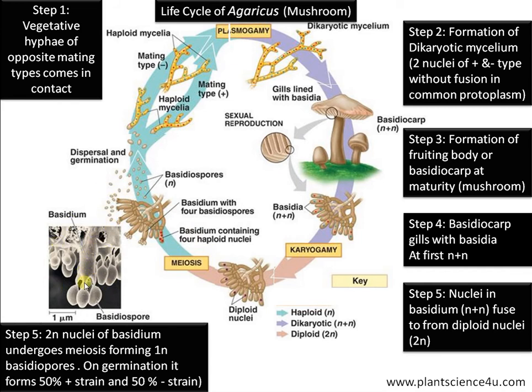This is an enlarged view of the basidium. You can see the basidium with an outgrowth called the sterigma. At the tip of the sterigma, four basidiospores are formed. These basidiospores are then disseminated.